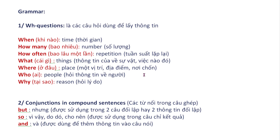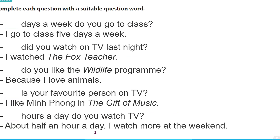'Who' - ai, hỏi về thông tin về người. 'Why' - tại sao, hỏi lý do. And the second grammar point: conjunctions in compound sentences. Trong bài 7 chúng ta học 3 từ nối cơ bản: 'but' - nhưng, dùng trong hai câu đối lập; 'so' - vì vậy, do đó, dùng trong câu chỉ kết quả; 'and' - và, dùng để thêm thông tin vào câu.